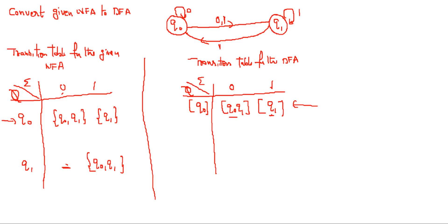We will discuss the single state q1 first. On applying 0 on q1, you are going to nothing — the empty state (∅). On applying 1 on q1, you are going to q0 q1. So one new state is generated from q1.